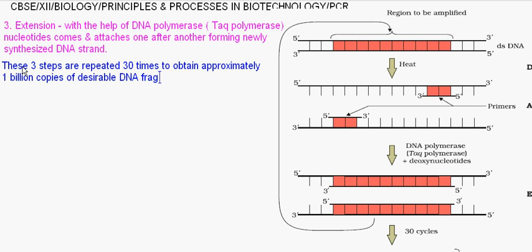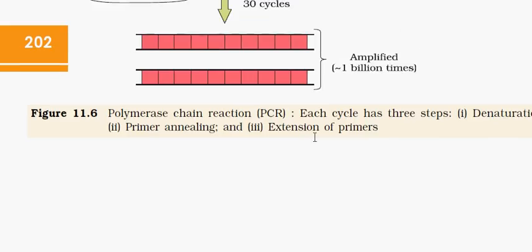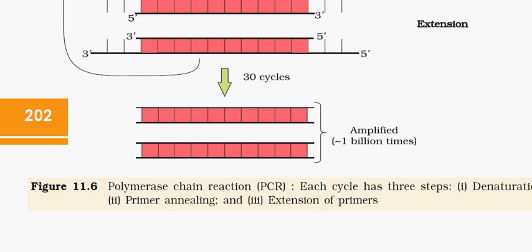As you can see in the diagram, this is the double-stranded DNA. The region to be amplified is shown in pink color. Heat is applied, and as a result, double-stranded DNA breaks into single-stranded DNA. Then, in the annealing step, primer is added at the 3-prime end of both template strands. DNA polymerase and deoxynucleotides are then added to carry out extension — the third step. This process is repeated for 30 cycles, amplifying the DNA approximately one billion times.